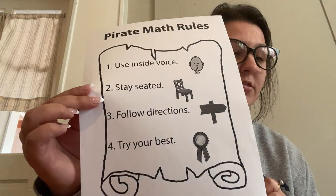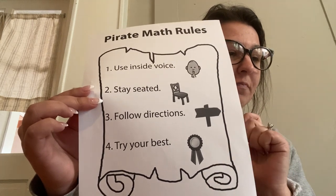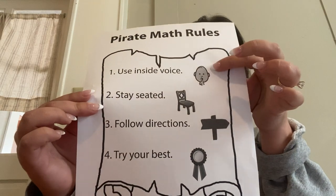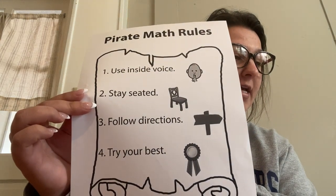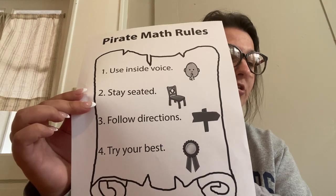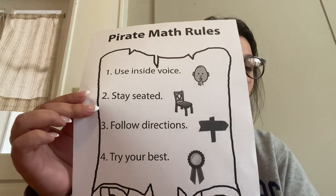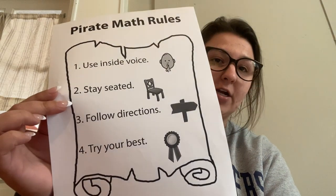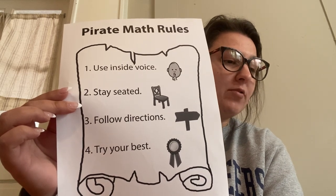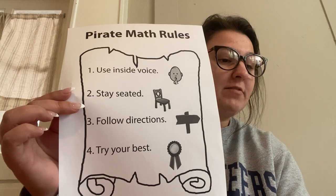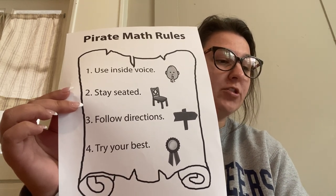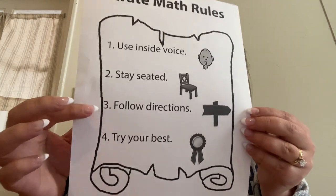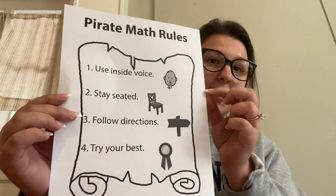Before we get started, let's talk about some rules. This poster shows us the rules for how we behave when we work together. The first rule says 'use inside voices.' I'll point to the picture and ask why it's a good picture to remind us of using inside voices. Students respond, and I confirm: we'll work hard in the library or hallway, wherever we're working, so we have to use our inside voices. Then I'll go over rules two, three, and four the same way.